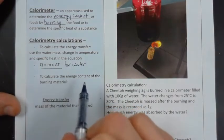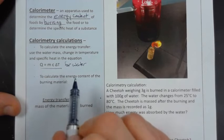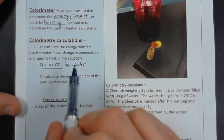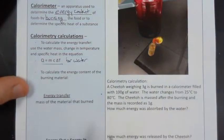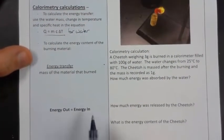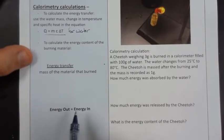To calculate the energy content of the burned material, we're going to say the energy that the water absorbed is equal to the energy that the food sample released. A big catchphrase for this particular topic is energy out is equal to energy in.